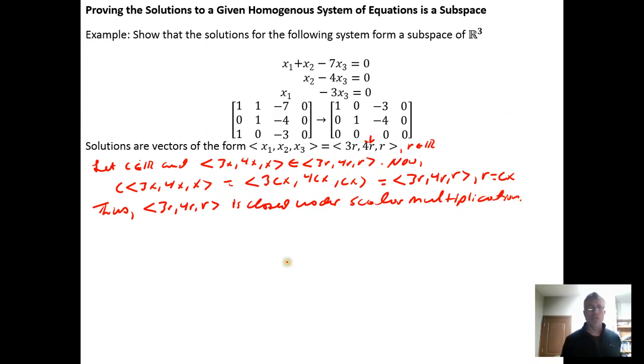Now we want to show closure under vector addition. Now consider two vectors: 3x, 4x, x, and 3y, 4y, y, that are elements of the subset that looks like vectors of the form 3r, 4r, r. I could explicitly say that x and y are real numbers, because that's the requirement, that r has to be a real number. But by saying that I'm an element of the set, that kind of implies that x and y are real numbers.